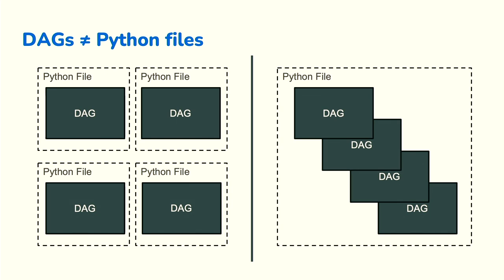Left-hand side is definitely fewer DAGs per file. But right below that in the Airflow documentation, it also says you should write efficient code. It's far more efficient to just write one file — one Python file that goes through and creates all the DAG objects — because DAGs do not equal Python files. A DAG is an object. A file is just a file. You might have many DAGs in one file, or many files that create one DAG.